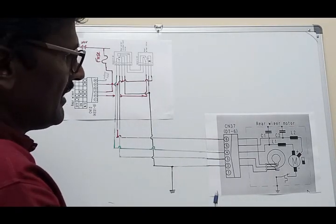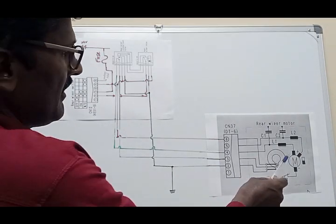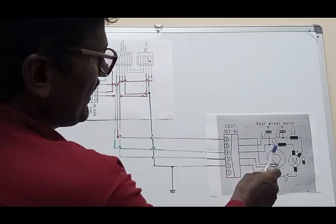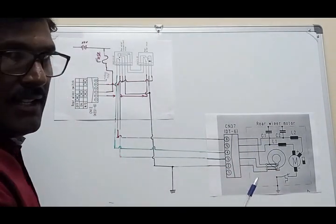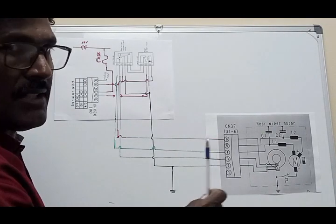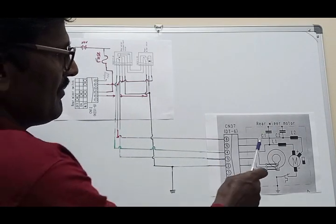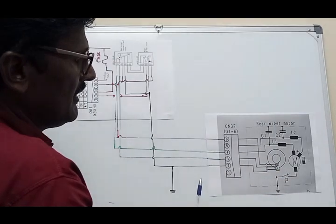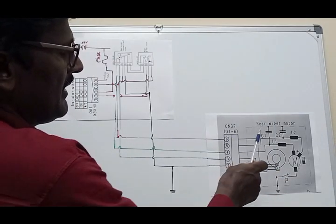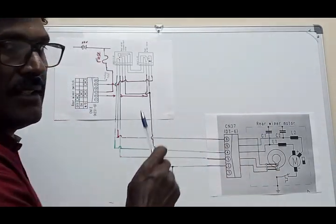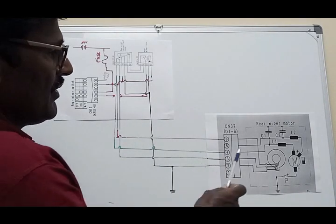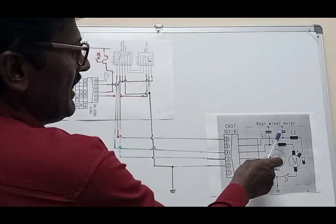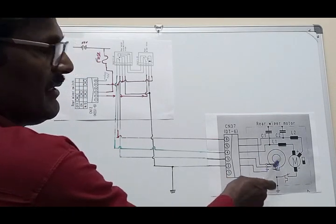So what does the inductor do? The inductor actually also slowly starts the motor because it opposes the current in the beginning — it will slowly start the motor. And this capacitor slowly stops the motor. So I am sure you can understand what is the purpose of the inductor and capacitor in this circuit.